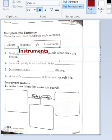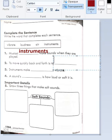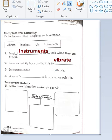Okay, so number two: To move quickly back and forth, move quickly back and forth is to vibrate. Excellent, vibrate. Okay, number three: Instruments make what vibrate?